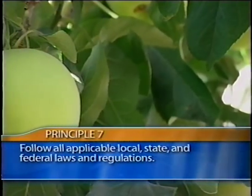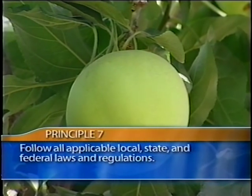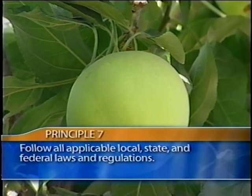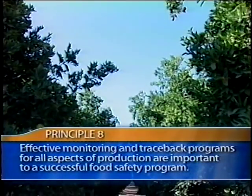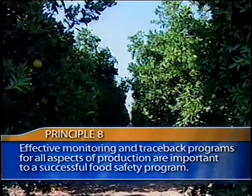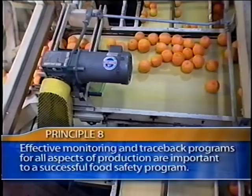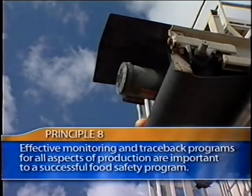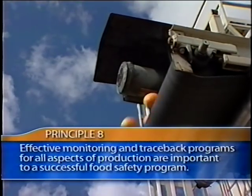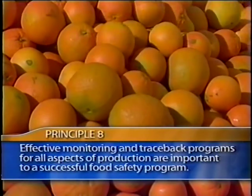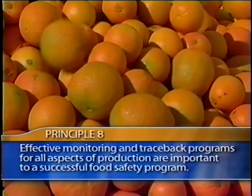Principle Seven: follow all applicable local, state, and federal laws and regulations, or corresponding or similar laws, regulations, or standards for operators outside the U.S., for agricultural practices. Principle Eight: accountability at all levels of the agricultural environment, including the farm, packing facility, distribution center, and transport operation is important to a successful food safety program. There should be qualified personnel and effective monitoring to ensure that all elements of the program function correctly and to help track produce back through the distribution channels to the producer.